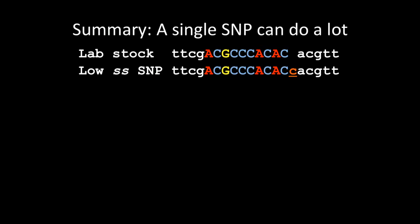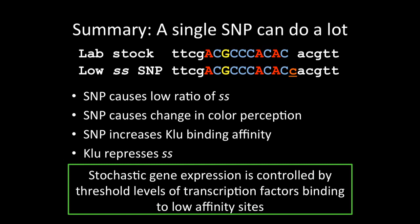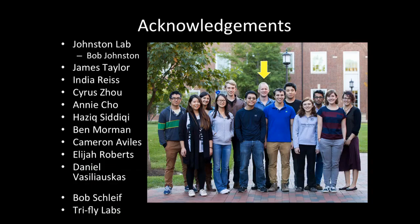So just to summarize, a single SNP can have many effects. It can cause, in our case, it caused a low ratio of spineless, which ended up changing the color perception of flies. It increased Clue binding affinity, and we determined that Clue represses spineless. And our overall take-home message is that stochastic gene expression is controlled by threshold levels of transcription factors binding to low affinity sites.